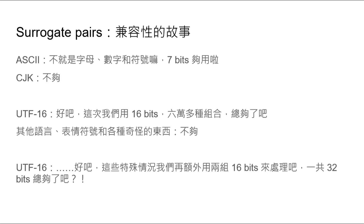但是後來我們有中文、日文、韓文，被稱為CJK的東西，就幾千幾萬種不同的可能，就不夠用啦。怎麼辦呢？當然這裡歷史簡化了好多，我知道有Big5、GBK之類的encoding，但是其中一個叫做UTF-16，就是OK，7個bit不夠用，我們用16個bit，就兩個byte，這樣總夠用了吧？就六萬多個組合。